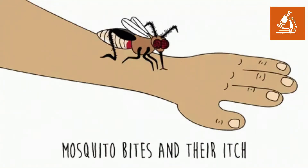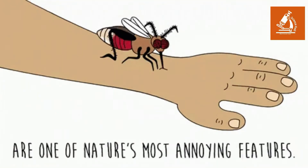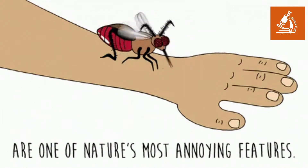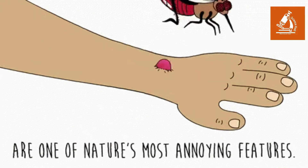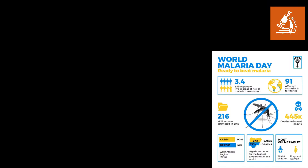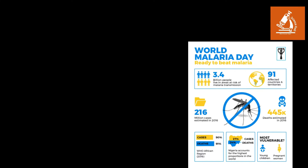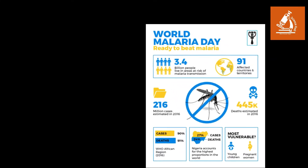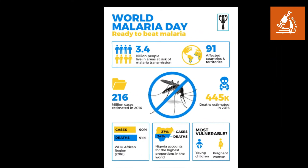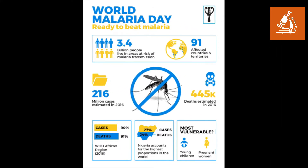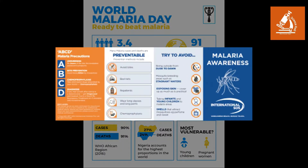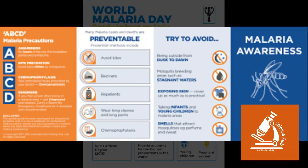Humans suffer from mosquitoes more than any other organism in the world. Every year there are over 1 million deaths due to mosquito-borne diseases. By knowing what disease you can get from various types of mosquitoes, you can protect yourself from them and tackle the after effects.